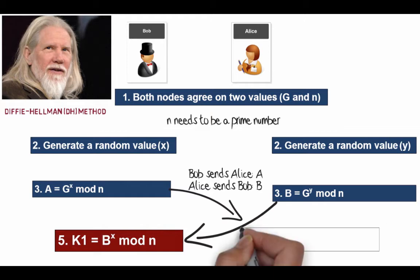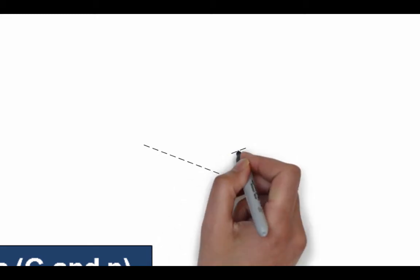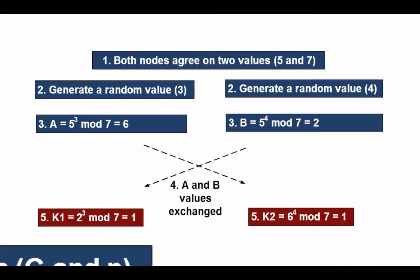In a practical example: g = 5, n = 7 (a prime number). Bob generates x = 3, Alice generates y = 4. Bob calculates 5^3 mod 7 = 6, Alice calculates 5^4 mod 7 = 2. Six gets sent over and two gets sent back. After each side does their further calculations they both end up with the same shared key — which is 1 in this simple example. In real life the values would be much greater.